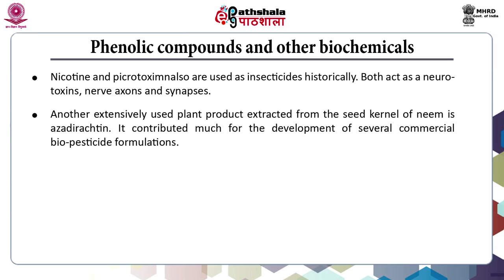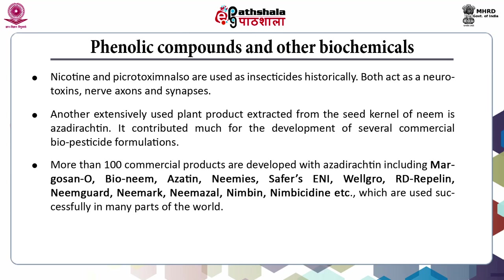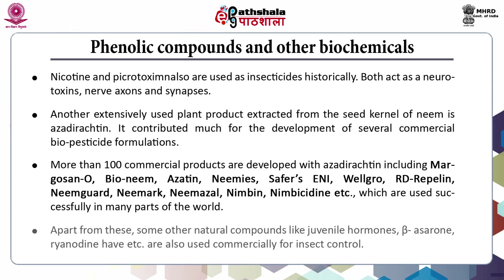Another extensively used plant product extracted from the seed kernel of neem is azadirachtin. It has contributed much to the development of several commercial biopesticide formulations. More than 100 commercial products have been developed with azadirachtin including Margosan, Bio Neem, Azatin, Neemix, Valgro and Nimbin, and these are used successfully in many parts of the world. Apart from these, some other natural compounds like juvenile hormones and ryanodine have also been used commercially for insect control.